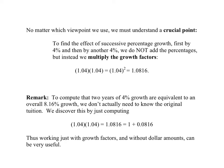Another remark here, and this is important, is that to compute the two years of 4% growth are equivalent to an overall 8.16% growth, we don't actually need to know the original tuition. We discover this growth factor of 1.0816 just by computing the product of the separate one-year growth factors. We have one year of getting multiplied by 1.04, followed by another year of getting multiplied by 1.04. So the overall effect of these successive growths is to get multiplied once by 1.0816. In other words, to grow by 8.16% overall.